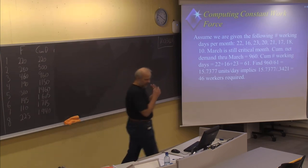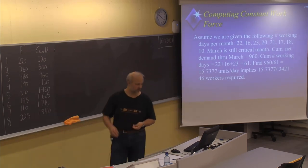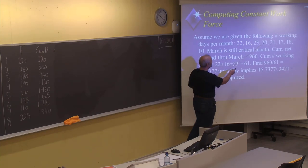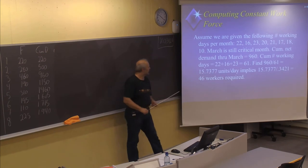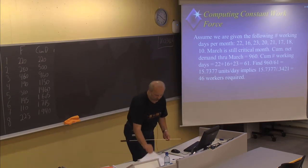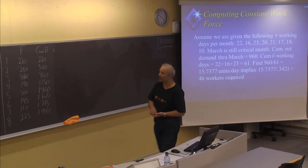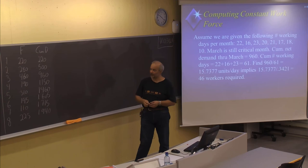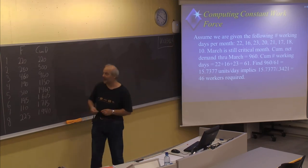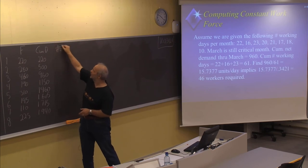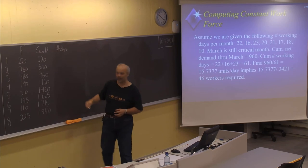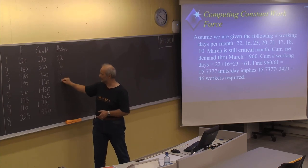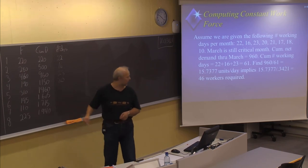We are given the different number of working days per month, and as we can see, it varies quite much: 22 in January, 16 in February, then 23, 20, 21, 17, 18, and 10. Let's now make a new column in the table. The forecast and cumulative demand remain the same, but now the number of days can be put in this column: 22, 16, 23, 20, 21, 22, 21, and 20.